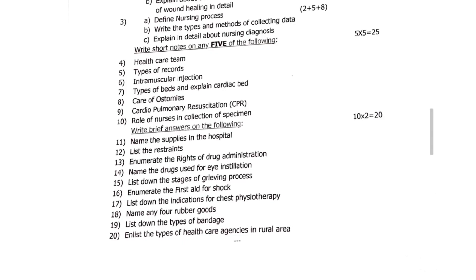Next, moving on to brief answers. Name the supplies in the hospital. List the resources. Enumerate the rights of drug administration. Name the drugs used for eye instillation. List down the stages of grieving process. Enumerate the first aid for shock. List down the indicators of physiotherapy. Name any four rubber goods. List down the types of bandage. Enlist the types of healthcare agencies in rural area.